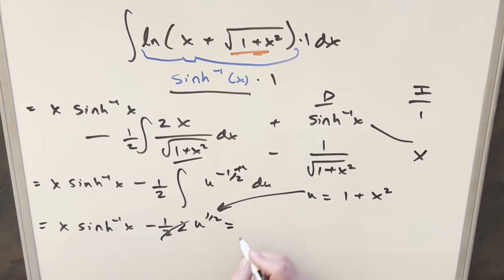And so putting this together for my final solution, we have x inverse sinh of x minus, we'll write this as the square root of this, 1 plus x squared, add a plus c, and that's it.